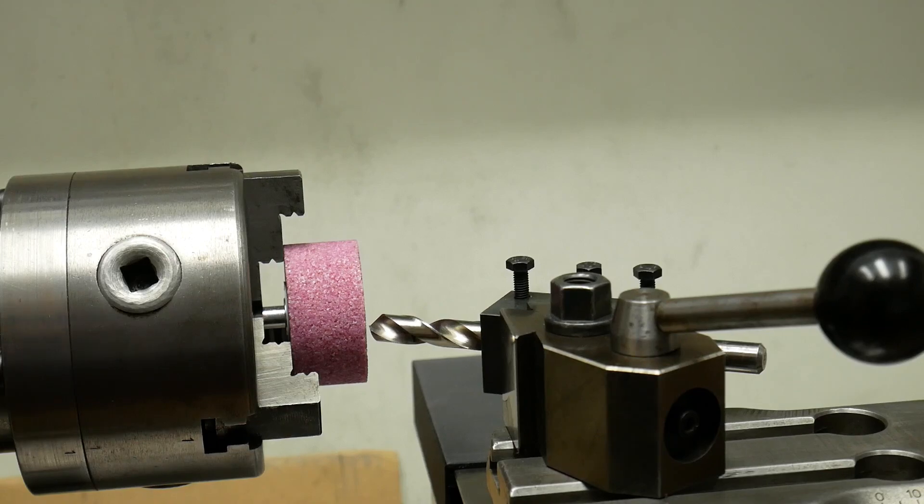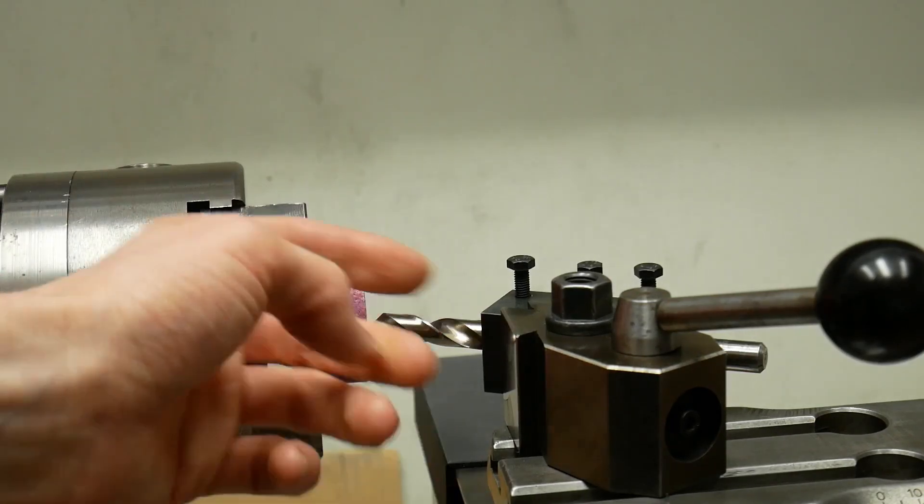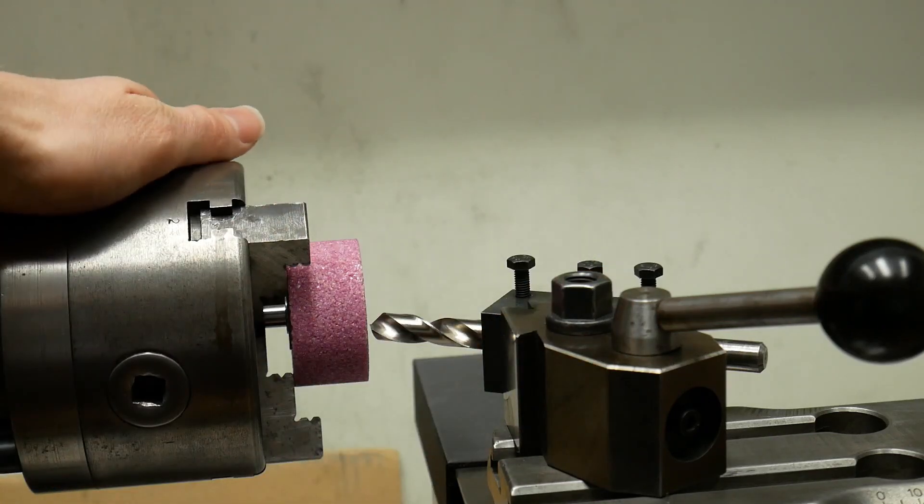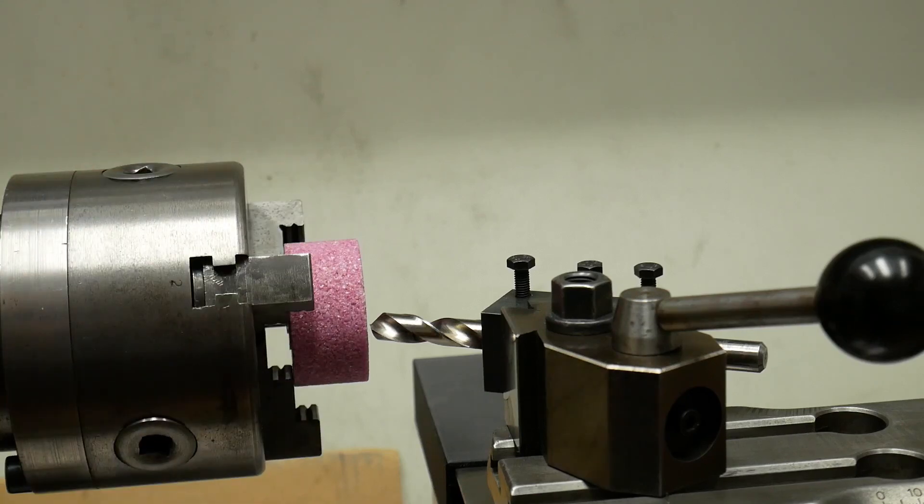Okay, I have a grinding wheel mounted in the lathe spindle, and the drill is mounted in the tool post, and let's grind. Oh, actually, I don't know. I don't like the setup.